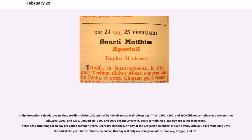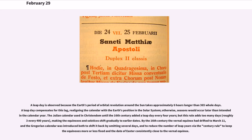A leap day is observed because the Earth's period of orbital revolution around the Sun takes approximately six hours longer than 365 whole days. A leap day compensates for this lag, realigning the calendar with the Earth's position in the solar system; otherwise, seasons would occur later than intended in the calendar year.